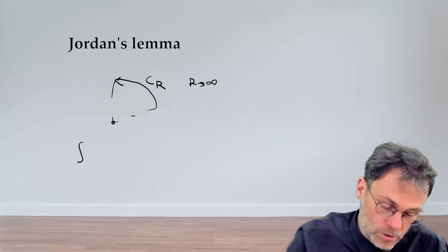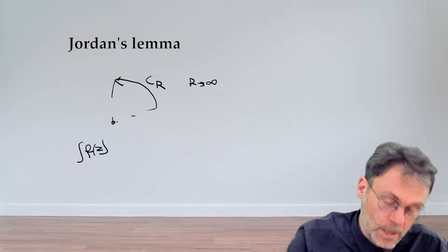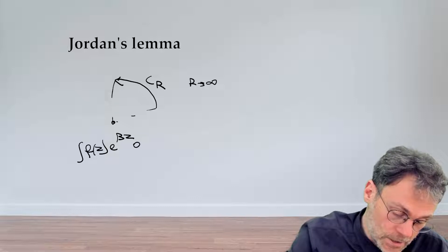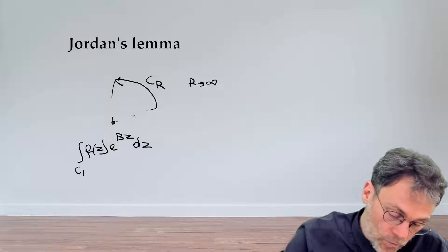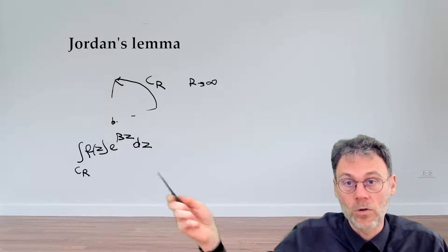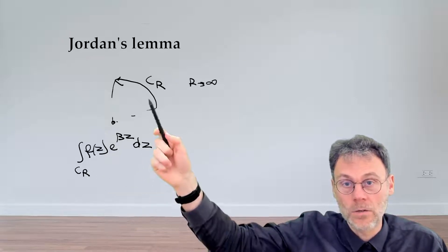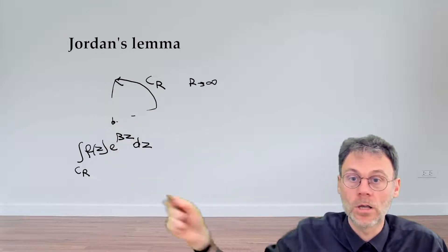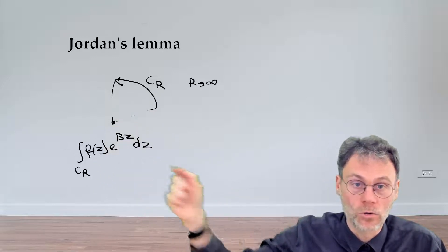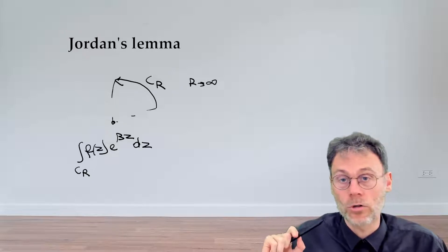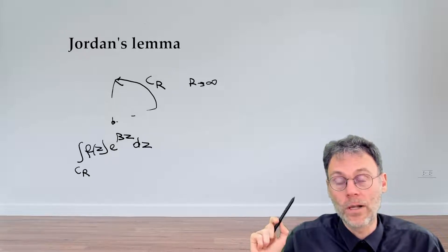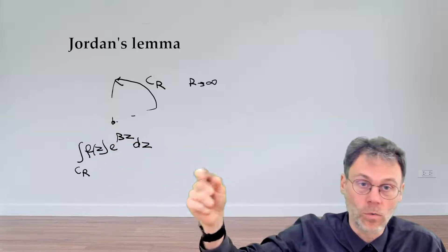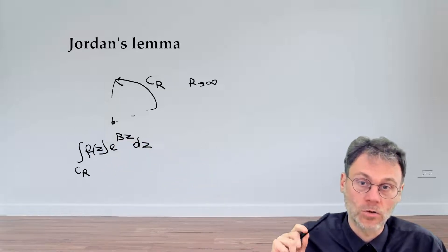So Jordan's lemma is about integrals of the following form: f(z)e^(βz)dz over this circular segment CR. Again, Jordan's lemma only deals with this part here, CR. These straight sections are not included. So this is not a contour integral over here. Jordan was wondering when will it happen that in the limits of R going towards infinity, this integral here will also vanish. So that's the question.